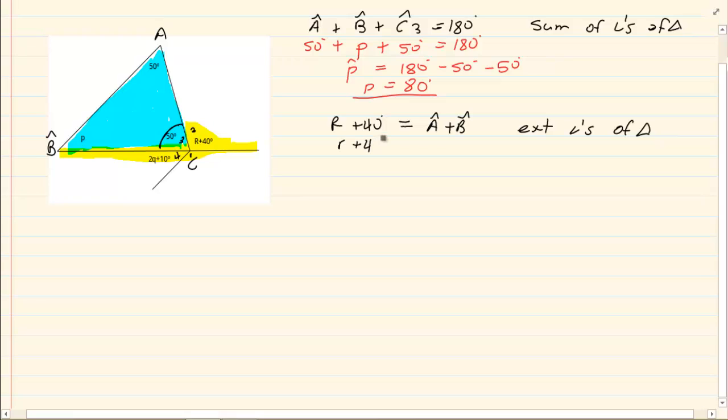Now, R plus 40 is equal to A is 50 degrees and B is 80 degrees as we've calculated before.